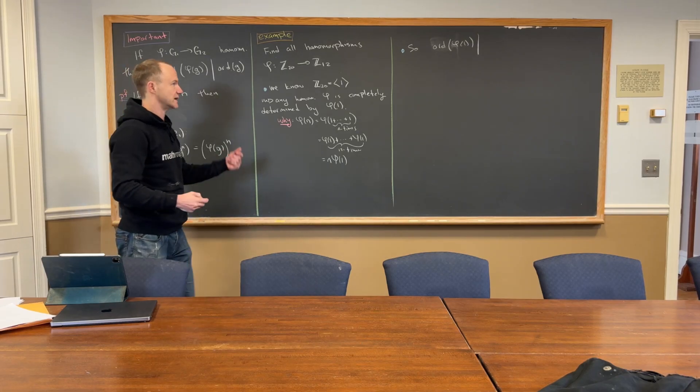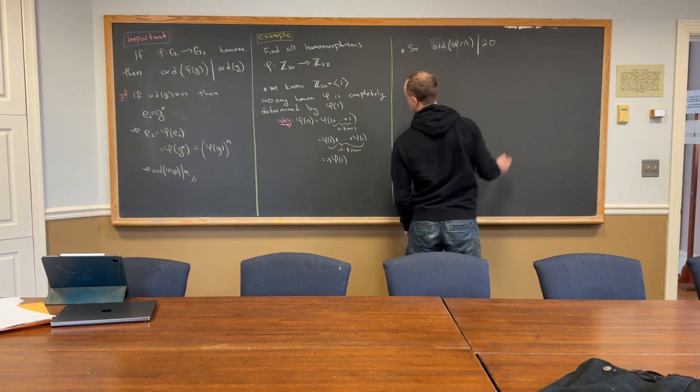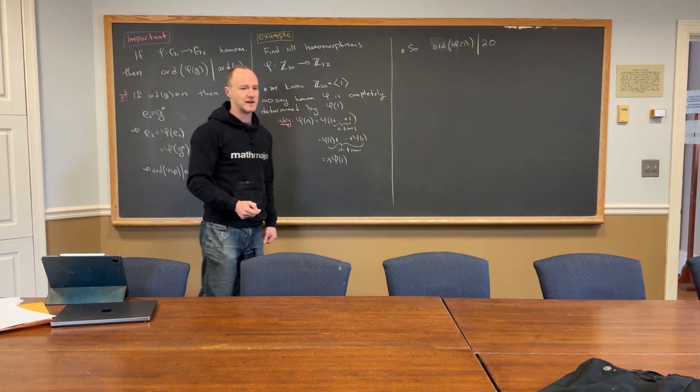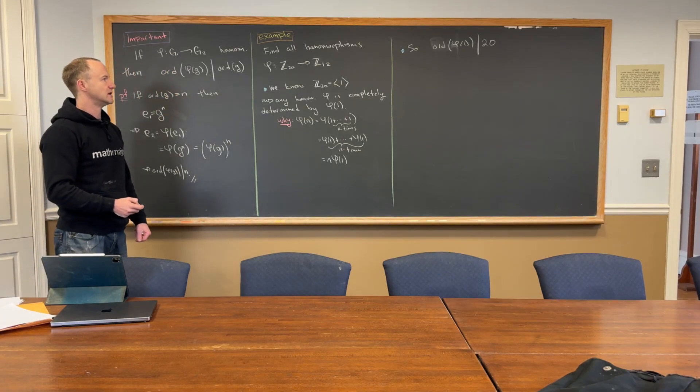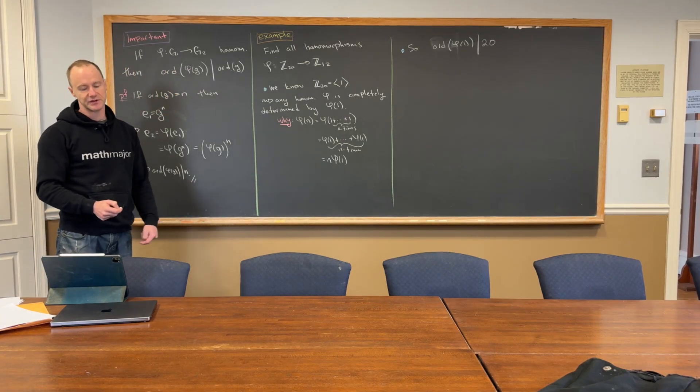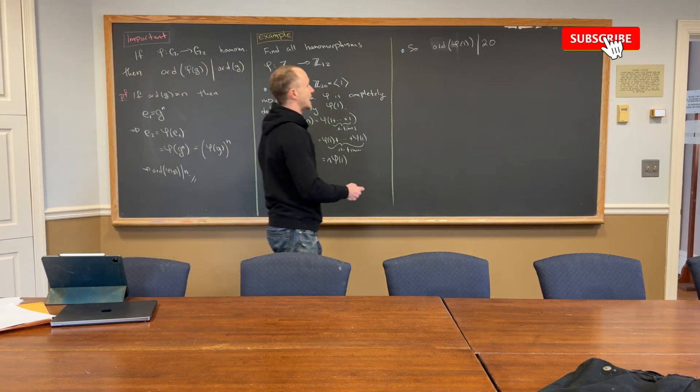But what's the order of one in Z20? 20? 20, yeah, exactly, right. It's the generator of a cyclic group of order 20, so it's 20, right? And then, I guess, like, just arithmetically, if you add one to itself 20 times, you get 20, but that's zero, right?